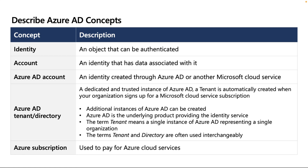An identity is any object that can be authenticated. An account is an identity that has data associated with it. An Azure AD account is an identity created through Azure AD or another Microsoft cloud service. For example, an Azure AD account is automatically created when you sign up for Office 365 or any Microsoft cloud service — one free Azure AD account is created automatically.